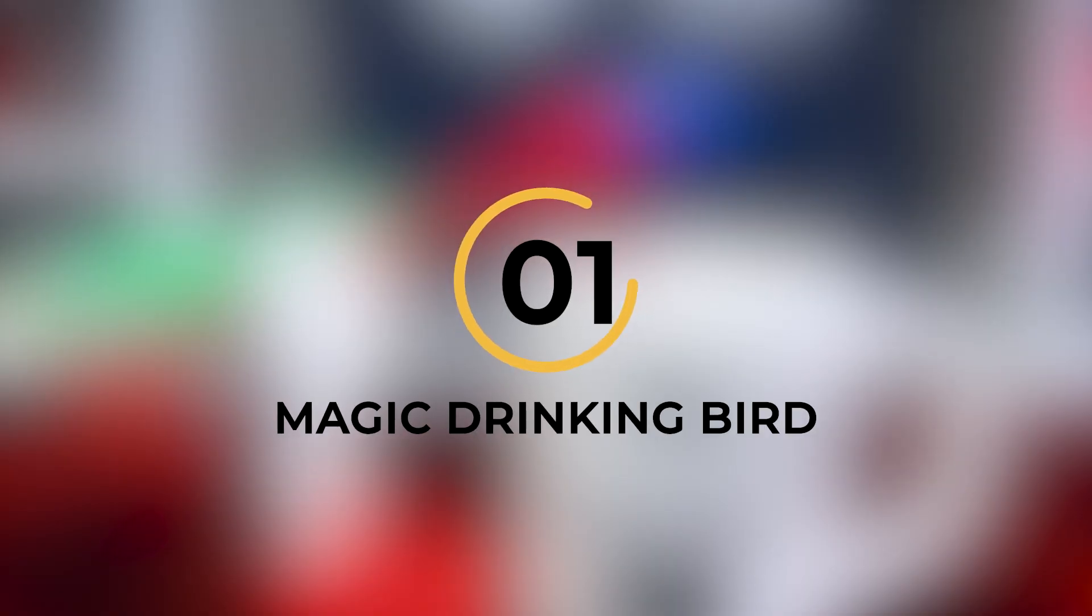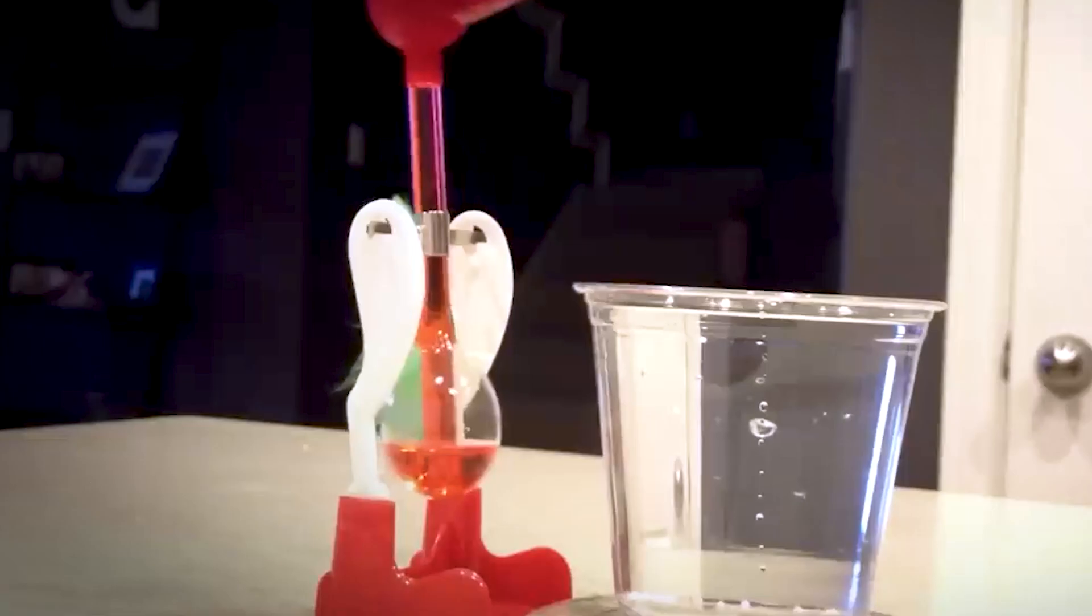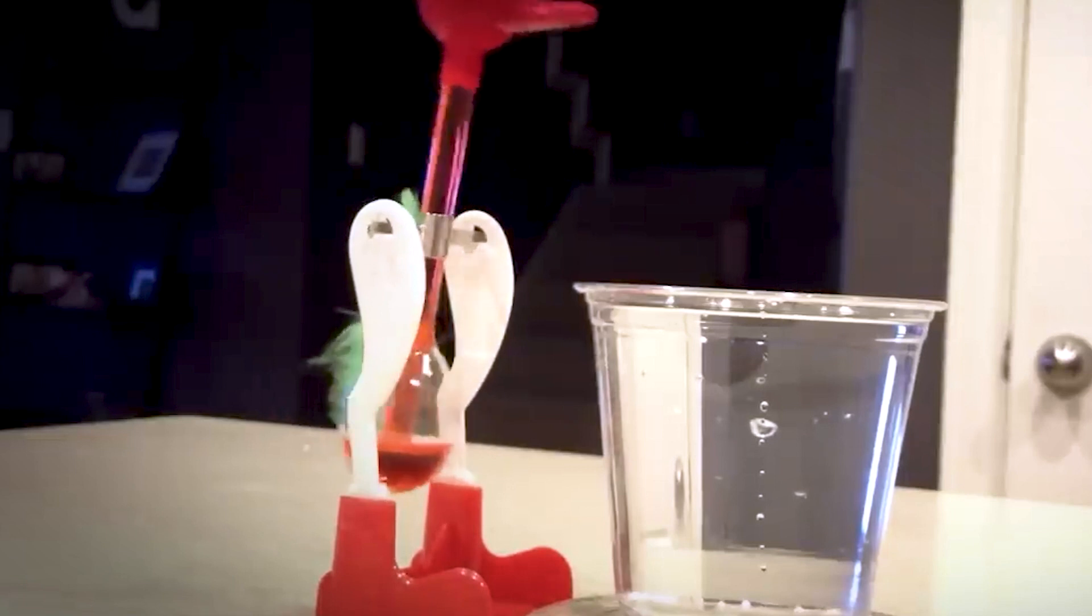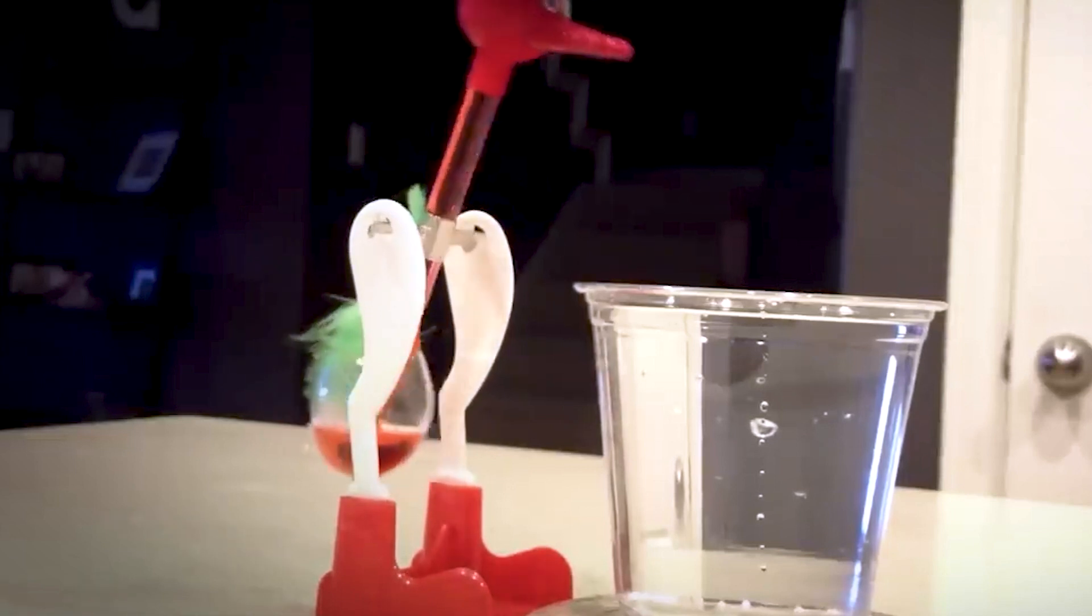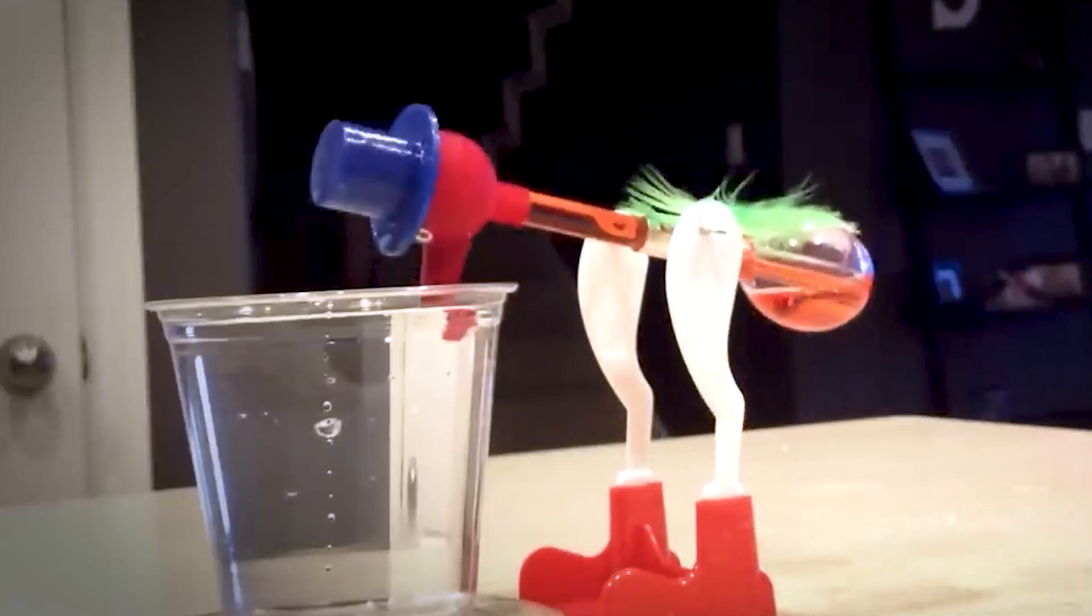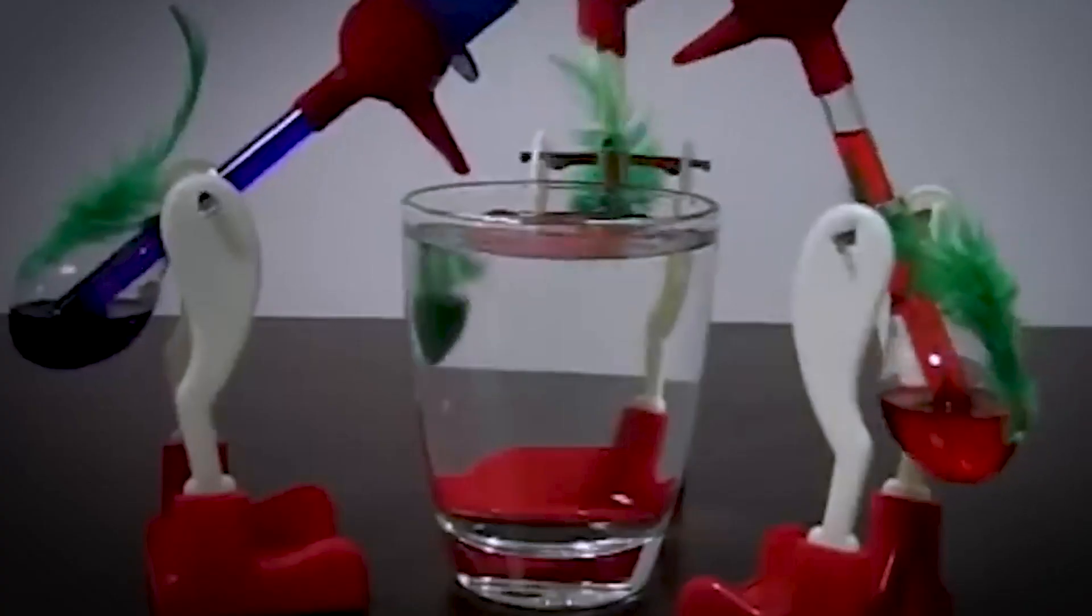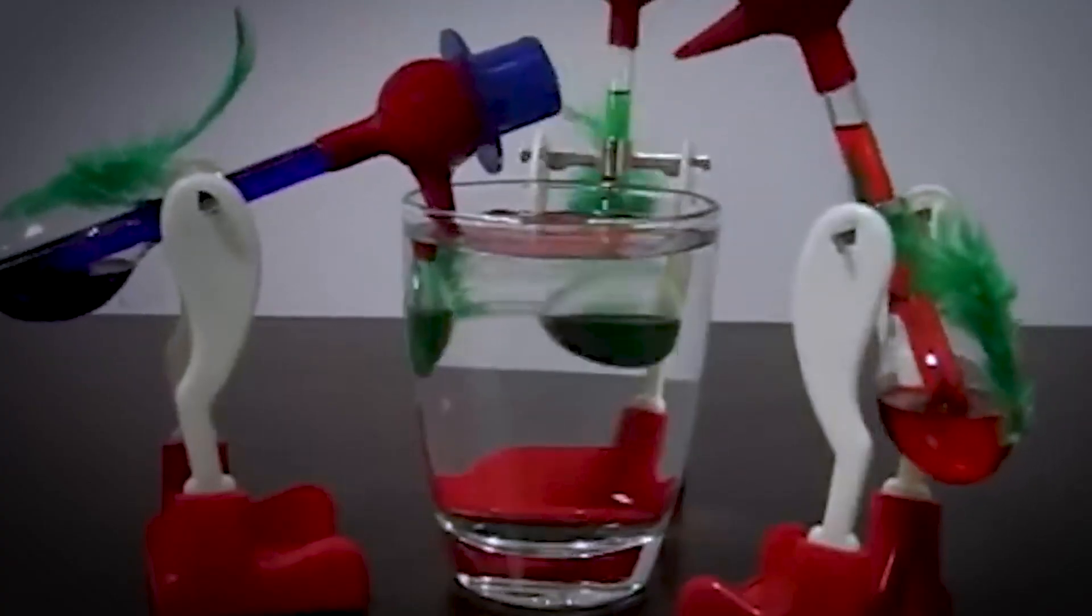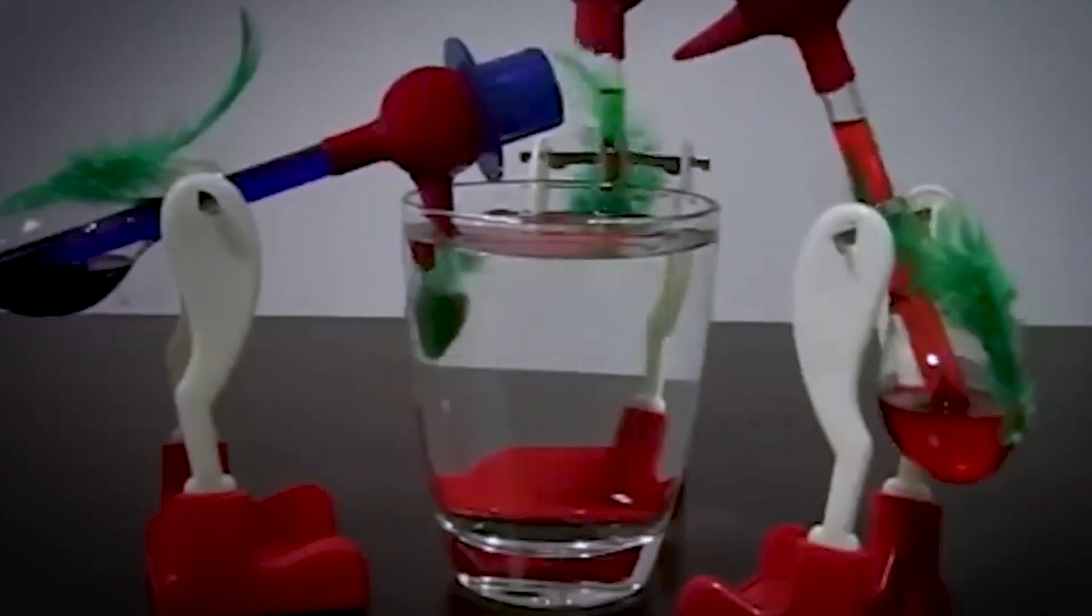Number 1. Magic Drinking Bird. Remember when you learned about water evaporation and the concept of weight in school? Well, here's a toy that brings those ideas to life in a fascinating way. The Magic Drinking Bird is a classic toy that both kids and adults can enjoy. This charming bird is filled with a special liquid that evaporates from its beak, making the top heavier than the bottom.